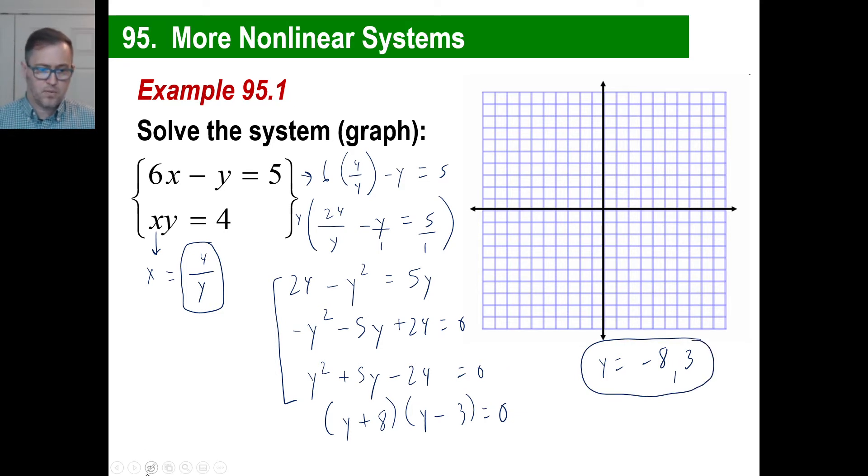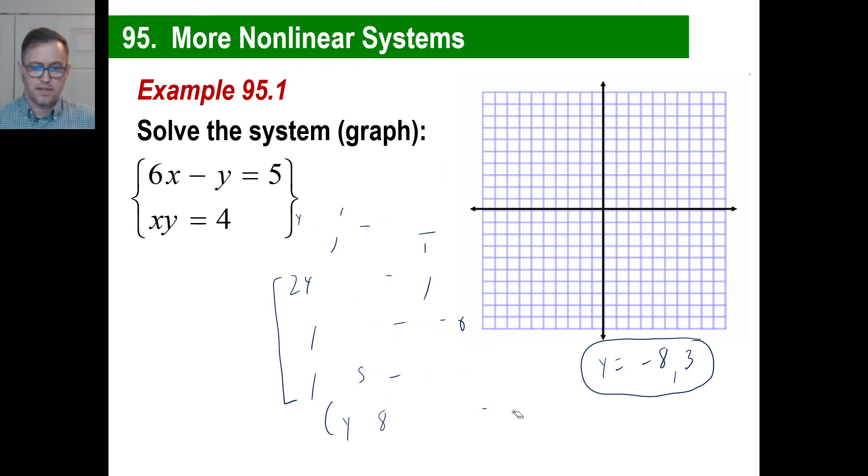And don't forget, you can always use the quadratic formula, like negative b plus or minus blah blah blah. But if you look at this for a second, you go, wait a minute. I've got two numbers that multiply to give me negative 24, and they add to give me 5. I got it. That's going to be y plus 8, and that'll be y minus 3. That equals 0. So I have the answer is negative 8 and 3. Those are my two y's. And there we go.